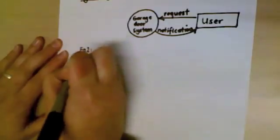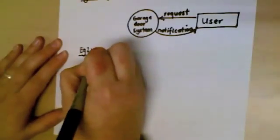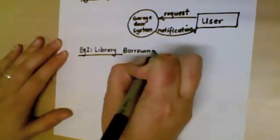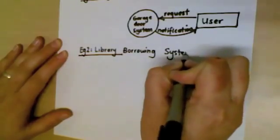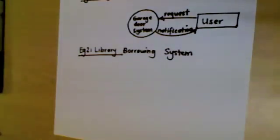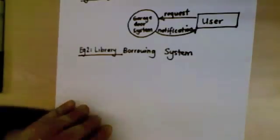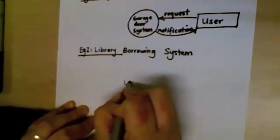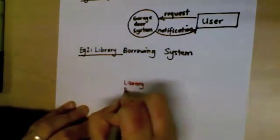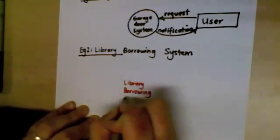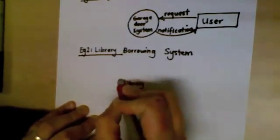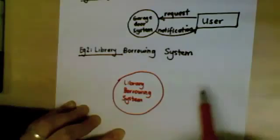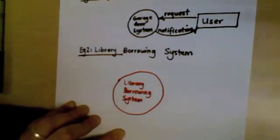In our second question we're going to do a context diagram for the library borrowing system. This borrowing system could get extremely complex or extremely simple, but let's start with what we know. We're always going to put our system down first, and the system always goes in a circle. The next thing is: who — people or systems — are going to provide data to our library borrowing system?